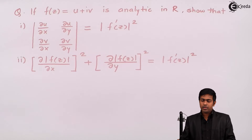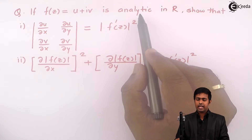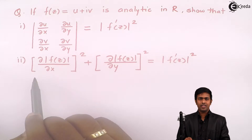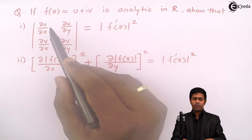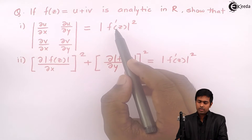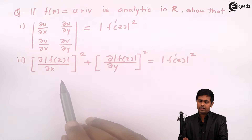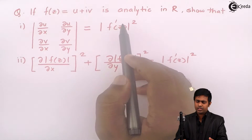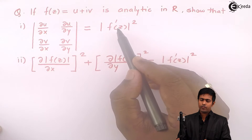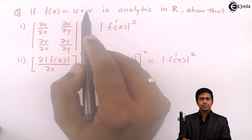Hello friends. In this problem, f(z) is given as u + iv and it is given that it is analytic in R. We have to show two results: the first one is that the determinant of the 2×2 matrix with entries ∂u/∂x, ∂u/∂y, ∂v/∂x, ∂v/∂y equals |f'(z)|², and the second result will be shown next. Let us start with the first result.